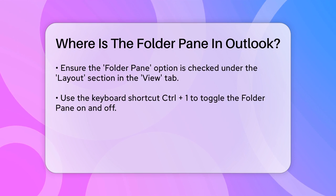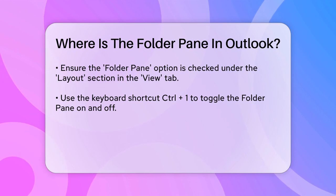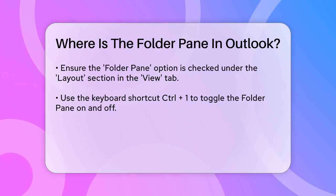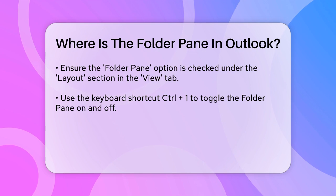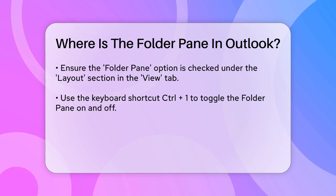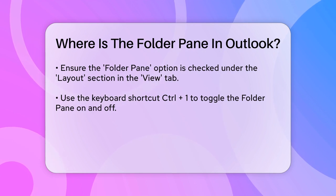Another way to ensure the folder pane is visible is to use the keyboard shortcut. Press Ctrl+1 on your keyboard to toggle the folder pane on and off.